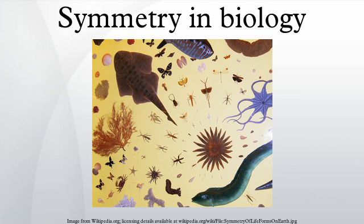Spherical symmetry occurs in an organism if it is able to be cut into two identical halves through any cut that runs through the organism's center. Organisms which approximate spherical symmetry include the freshwater green alga Volvox. Bilateral symmetry: in bilateral symmetry, only one plane, called the sagittal plane, will divide an organism into roughly mirror image halves, giving approximate reflection symmetry. Animals that are bilaterally symmetric have mirror symmetry in the sagittal plane, which divides the body vertically into left and right halves.